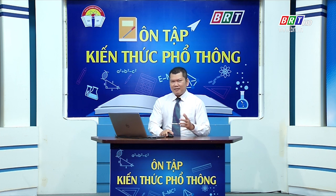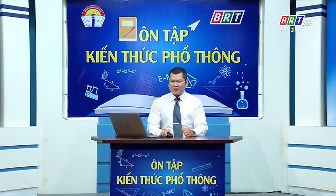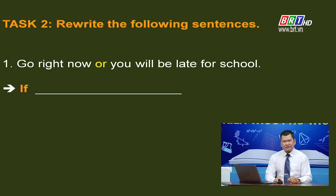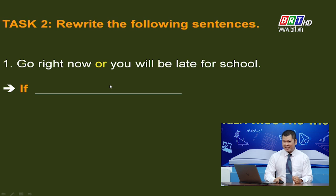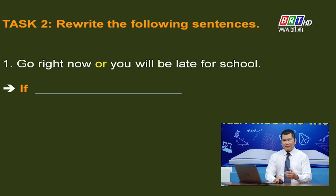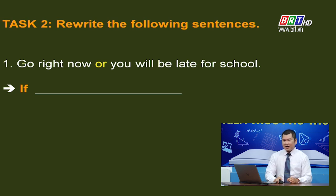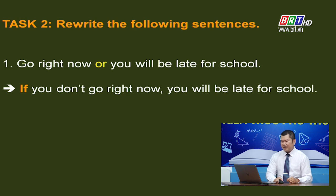Now let's move to Task 2: Rewrite the following sentences. Sentence 1: 'Go right now or you will be late for school.' The clause after 'or' is the main clause. The situation can happen, so this is a Type 1 conditional. Rewritten: 'If you don't go right now, you will be late for school.'